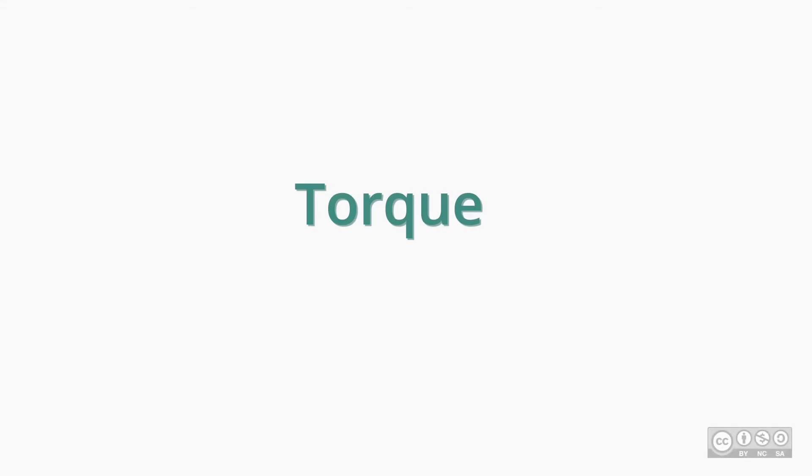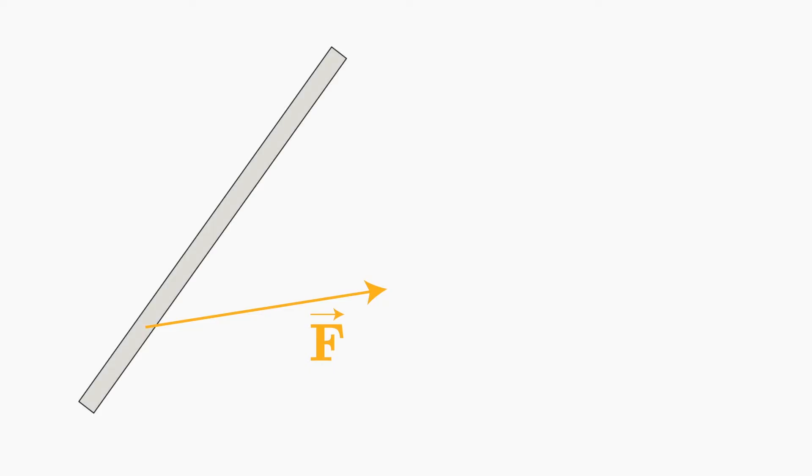Let's think about calculating torque. I have a force F being applied to an object, and that object is pivoted at a point Q. I'll define R as the vector from the pivot point Q to the point of the application of the force.